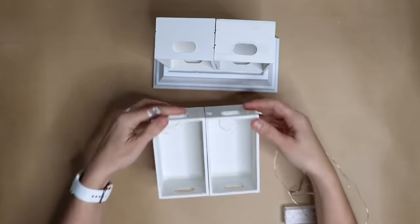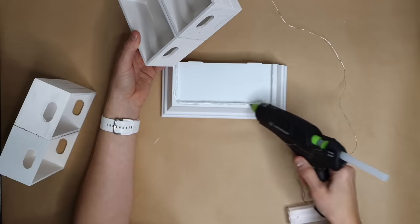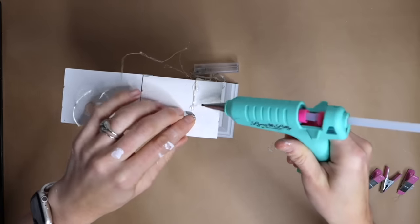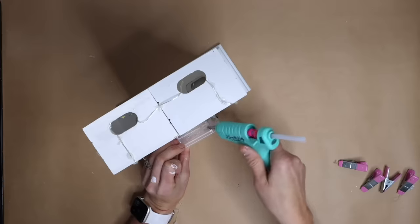Assemble two crates together with hot glue and then attach to the second shelf upside down with more hot glue. Take fairy lights and weave it through the holes of the wood crates.